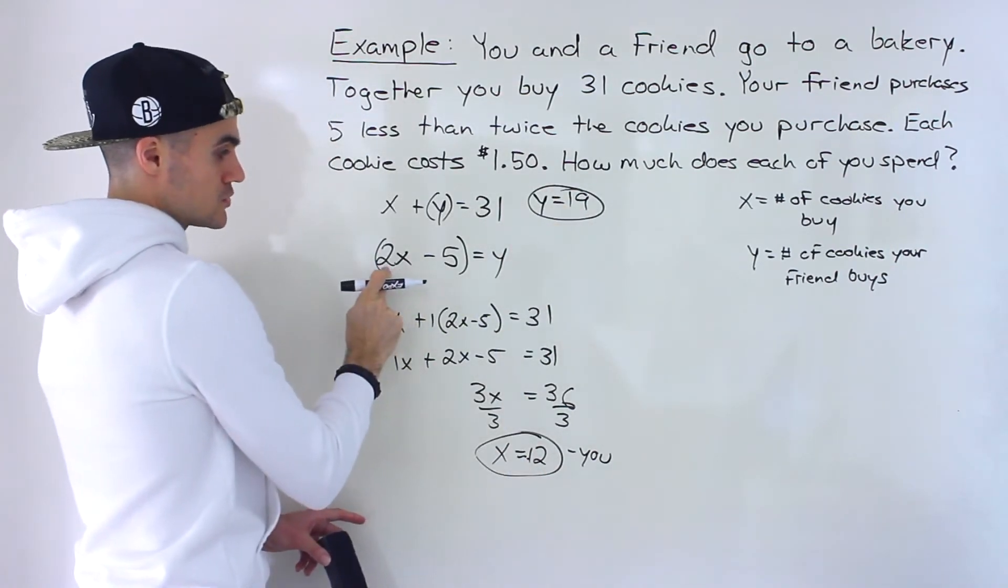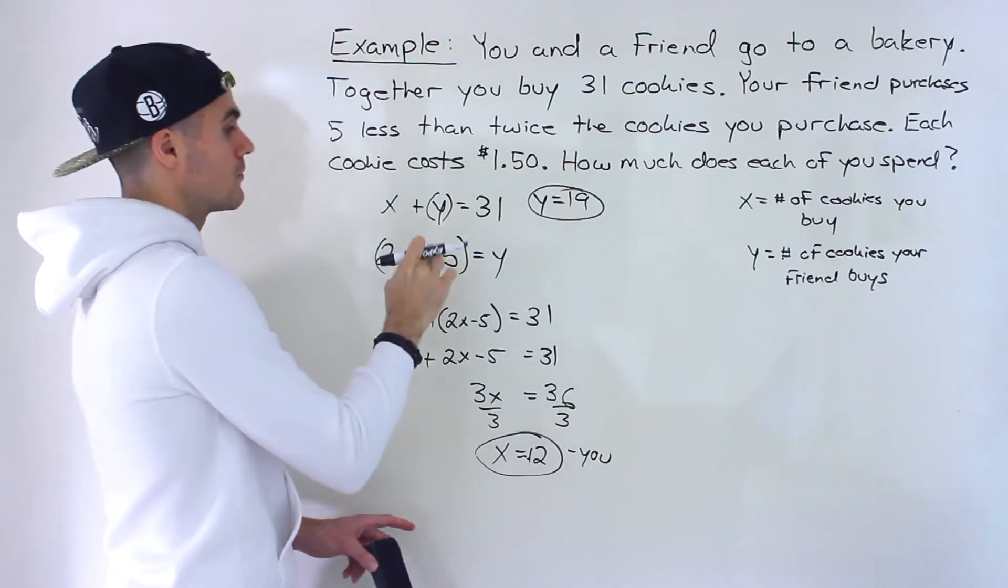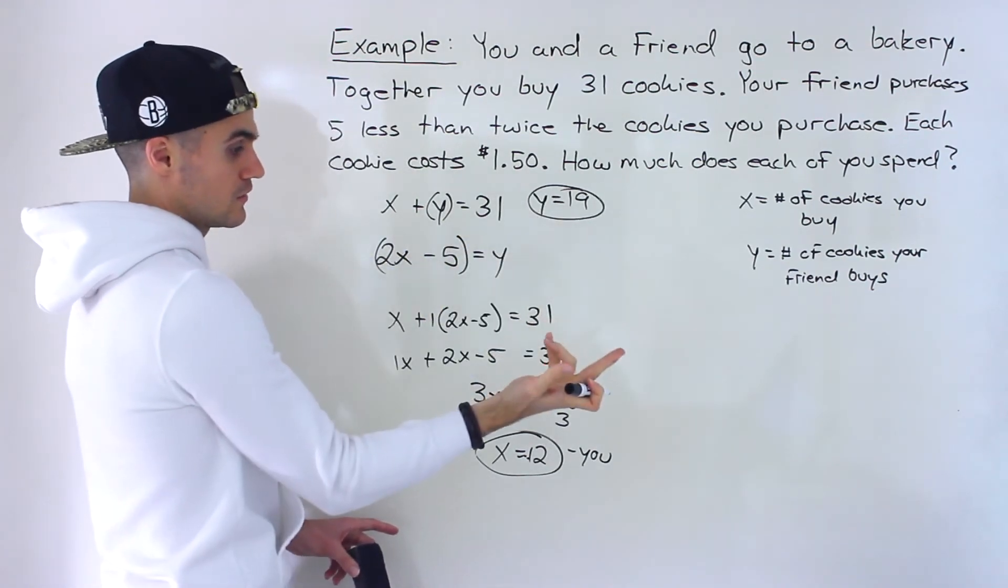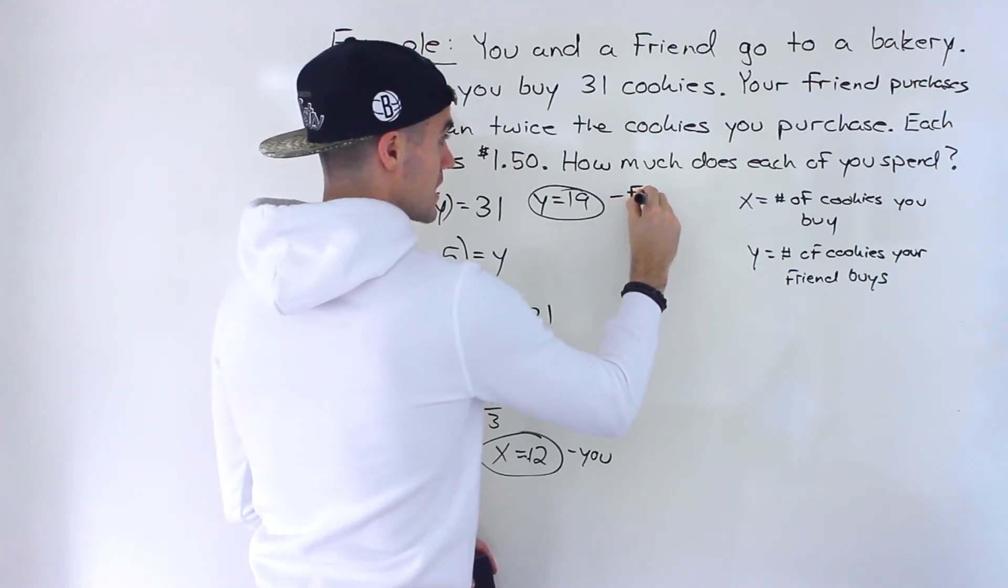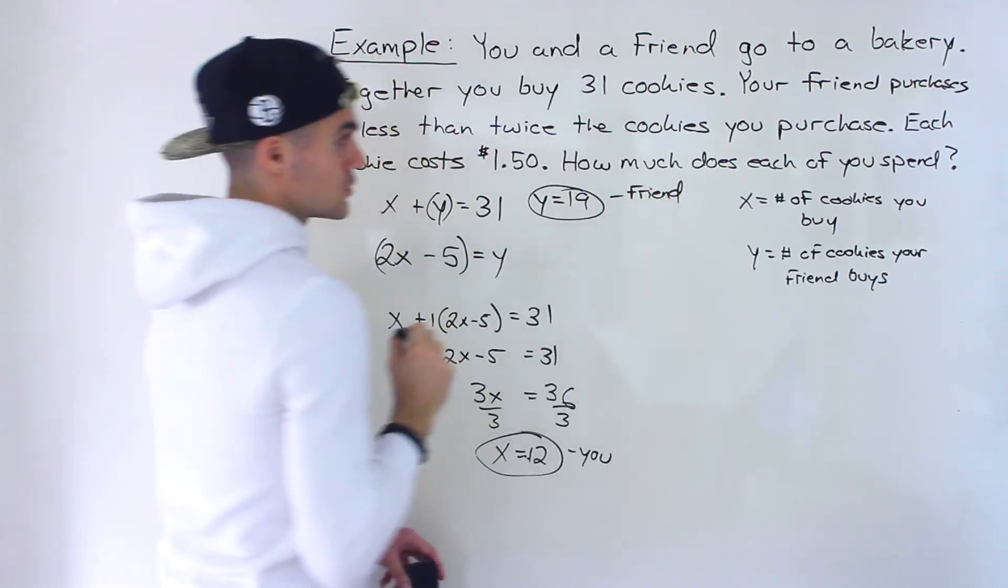If we take the 12, plug it in here. 2 times 12, which is 24. Minus 5 would also give us 19. So this here is the amount of cookies that your friend purchases.